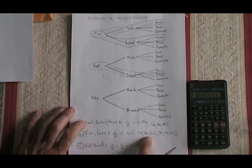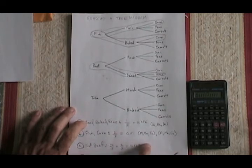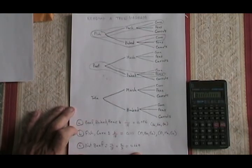We can also list the ordered triads that do not include beef, but there are 12 of them. So we would have to list 12 of these ordered triads. If the question asks us to do it, of course we can. Now you know how to read a tree diagram.